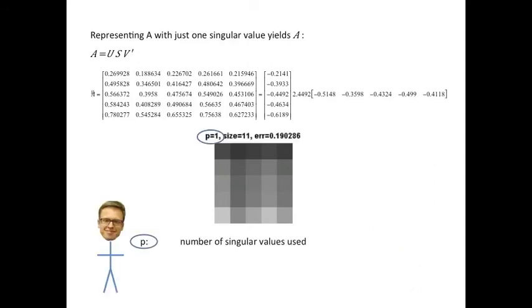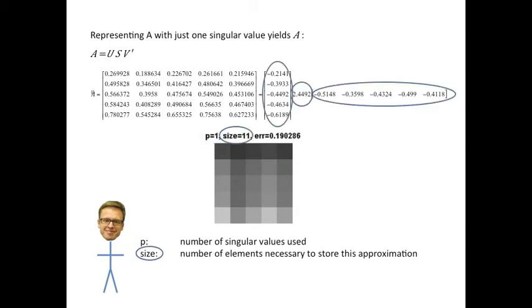Yes, but look, we only kept one singular value to approximate the image. As we keep more, the image quality improves, but you would need to store more data. Here, we only need to store 11 values to approximate the original A, which has 25 elements.